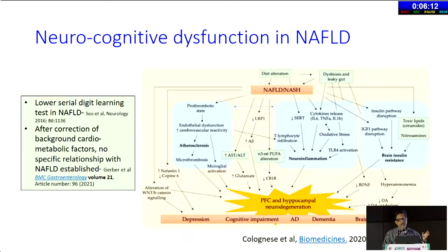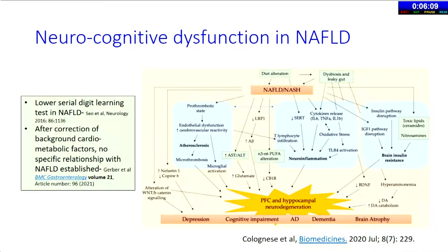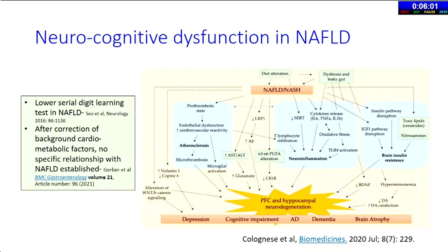Even before cirrhosis, there is progressive neurocognitive dysfunction and decline. Alzheimer's disease is now being discussed as part of the metabolic syndrome spectrum — and it starts much earlier. It's not hepatic encephalopathy; it is actually primary neurocognitive dysfunction. As we think about encephalopathy in the context of NASH cirrhosis, we have to generate more data around this progressive background neurocognitive decline to see how much is attributable to the liver and how much to something else.